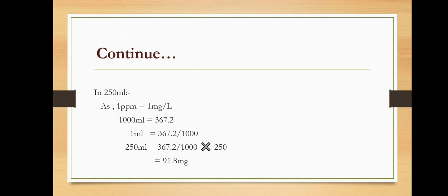Because we need to calculate it in 250 ml, we will divide 367.2 by 1000 and multiply by 250. For example, if calculating for 500 ml, we would multiply by 500. But here we have 250 ml, so we multiply by 250. The answer will be 91.8 mg.